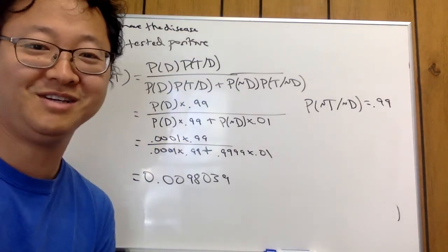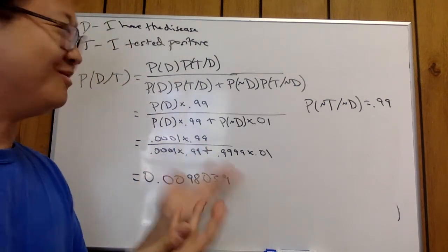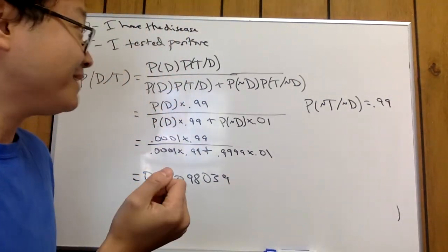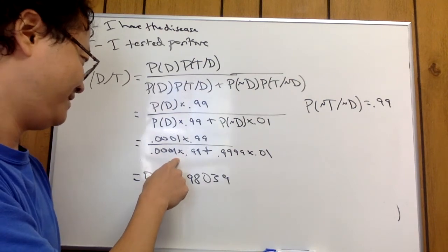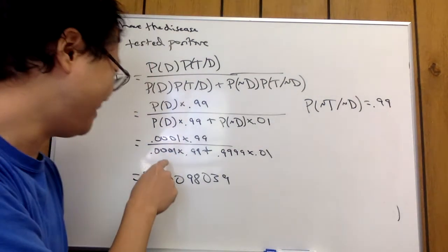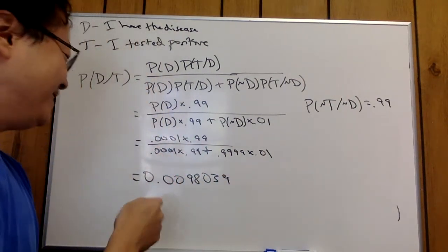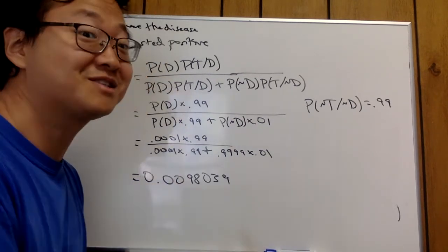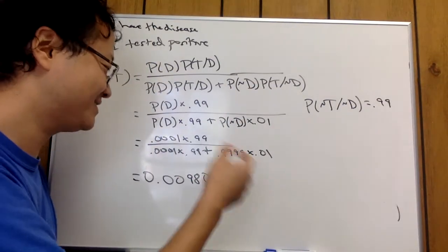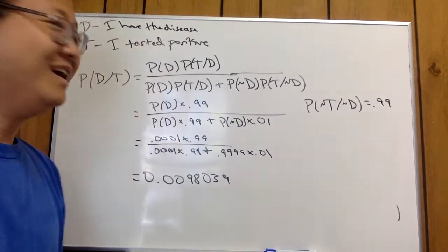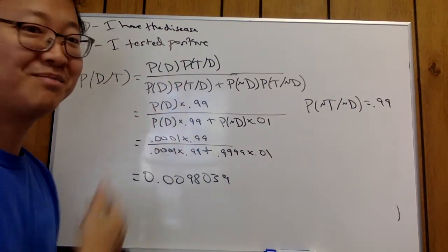This is going to be very important for the fine-tuning argument. You might think the test seems useless since the probability is so low, but initially your probability of having the disease was 0.0001 — way less than 1%. Once you test positive, it jumps to about 1%. If you took the test again, that 1% becomes your new prior and the probability would increase further. So these tests aren't valueless — the point is to show us the value of knowing the prior probabilities.